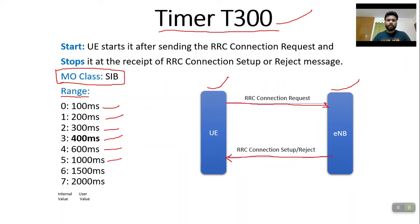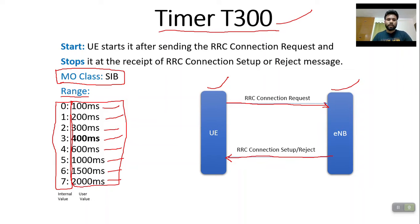The range of timer T300 is 100ms, 200ms, 300ms, 400ms, 600ms, 1000ms, 1500ms, and 2000ms. These are the actual values. The internal values are 0, 1, 2, 3, 4, 5, 6, 7. In Nokia, when we fetch the dump, we have the option to receive the value either in internal value form or user value form. That is why I consider both, so there is no confusion.